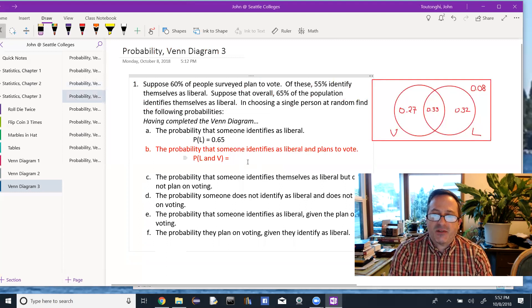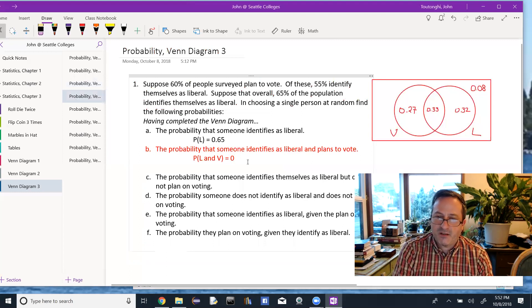Next part. Probability that someone identifies as liberal and plans to vote. So that's an intersection. I look at the probability of L and V, and that's the innermost part of the Venn diagram. 0.33.